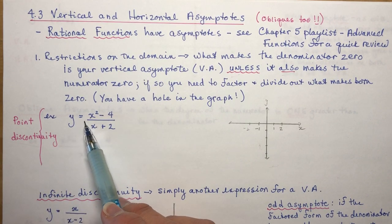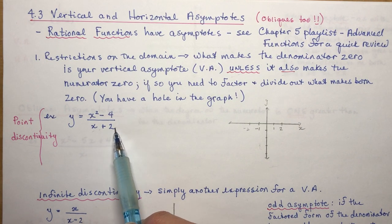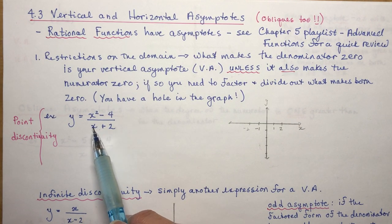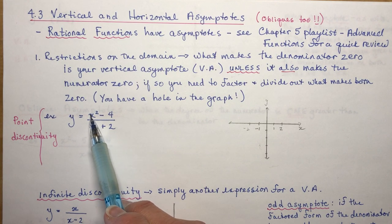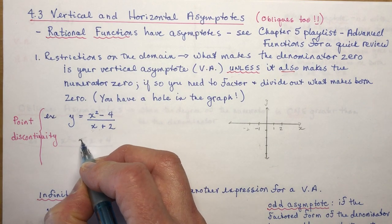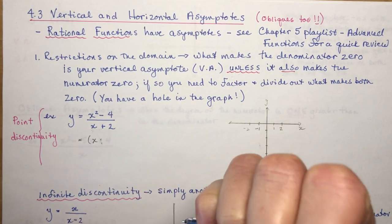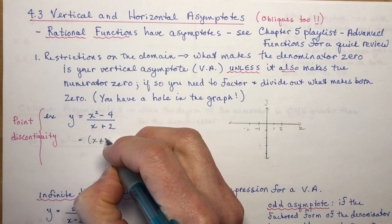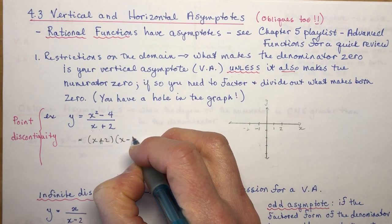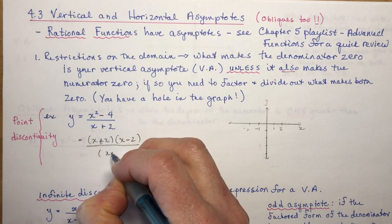We call that a point discontinuity. Here's an example: I look to the denominator and ask what makes it 0 — that's minus 2, because minus 2 plus 2 is 0. But if I put minus 2 into the numerator and square it, I get 4 minus 4, which is also 0. So the numerator is simply a difference of squares.